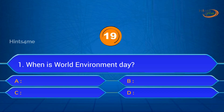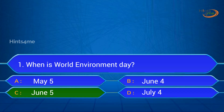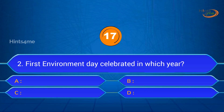Question 1: When is World Environment Day? A. May 5, B. June 4, C. June 5, D. July 4. Answer: June 5.